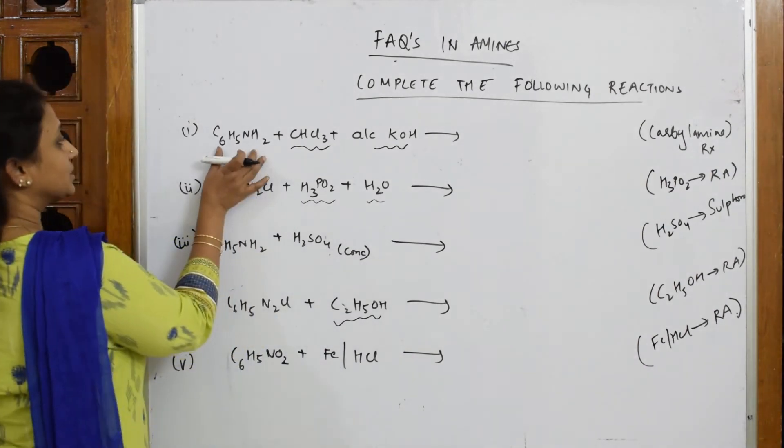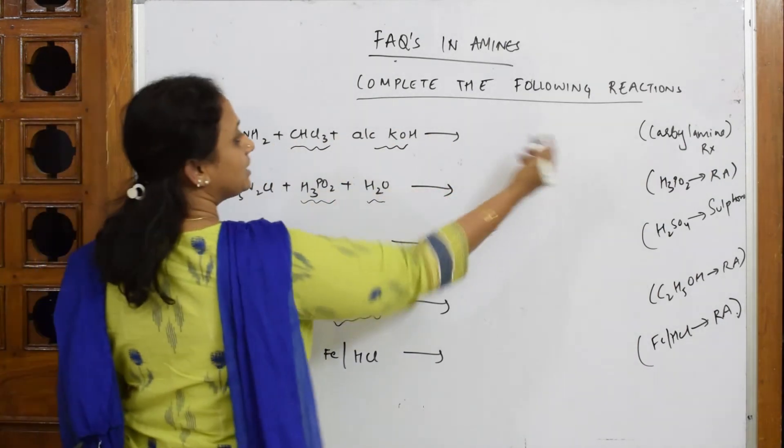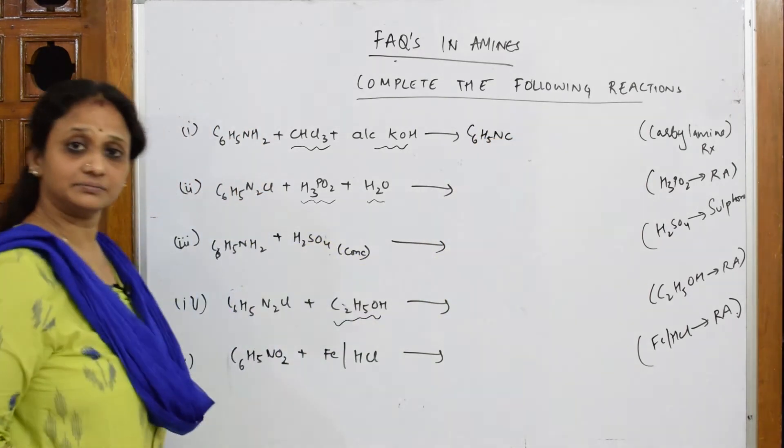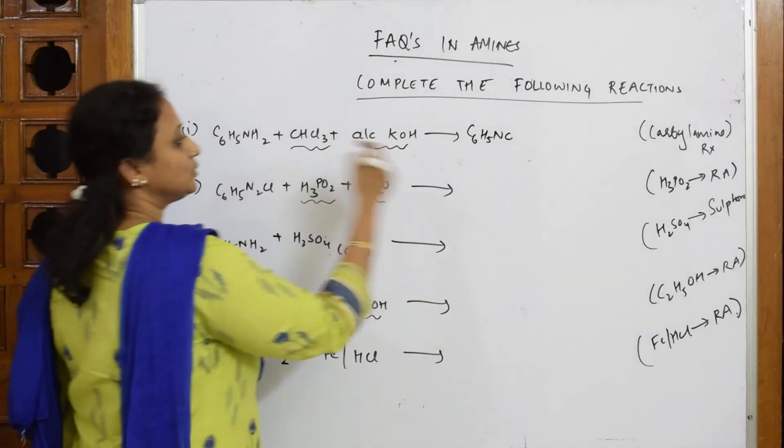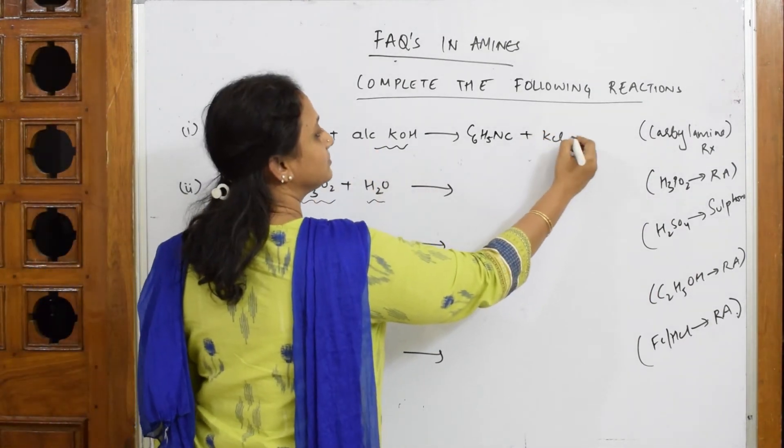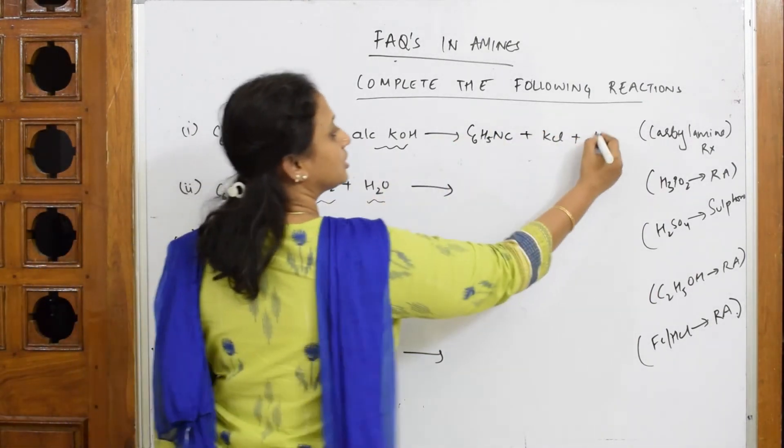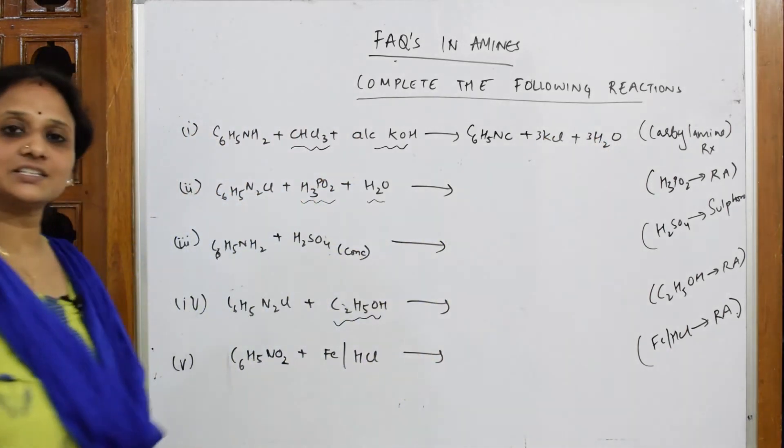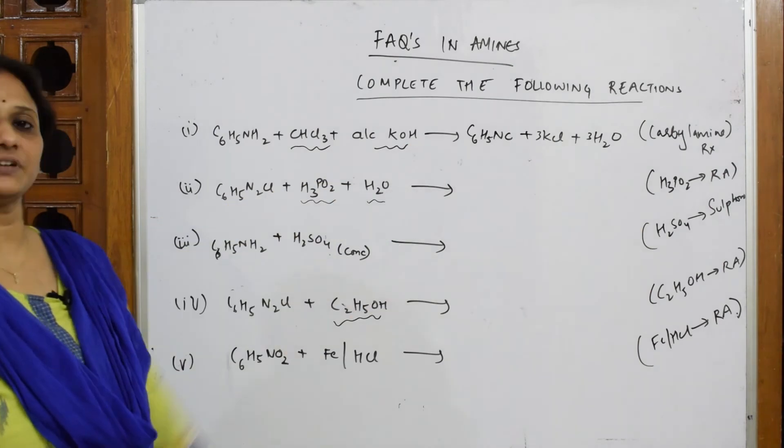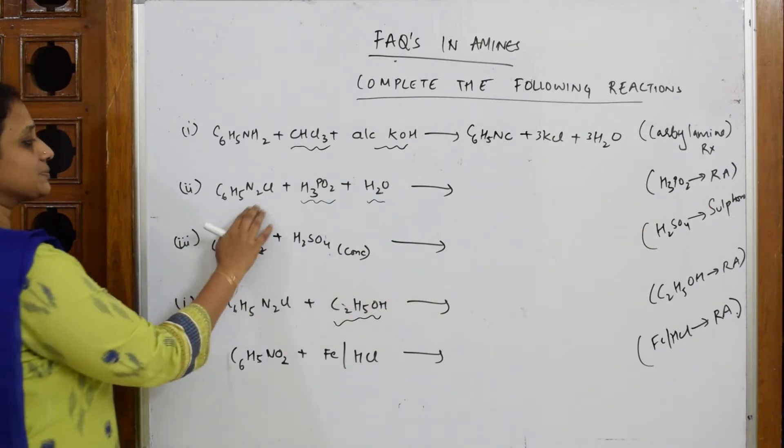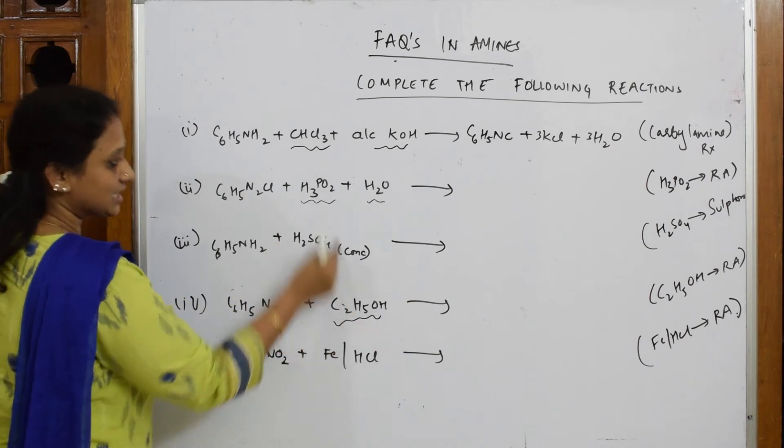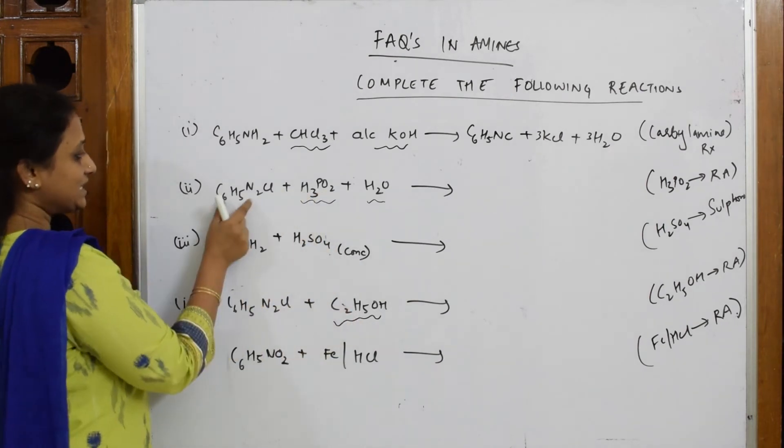So this, aniline in carbylamine reaction, first gets converted to isocyanide. The leftover you will get KCl and water, both 3 and 3. This is your carbylamine reaction, the final product.